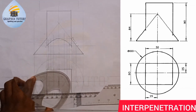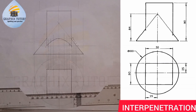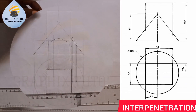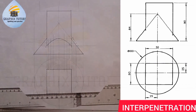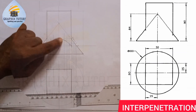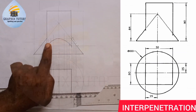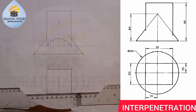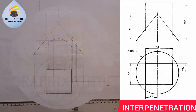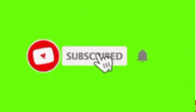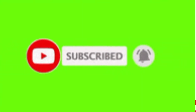This is the curve of intersection — where the square prism penetrates the cone. This is the curve of intersection. If you have found this video helpful, please don't forget to like, subscribe, and share the video. Thanks for watching.